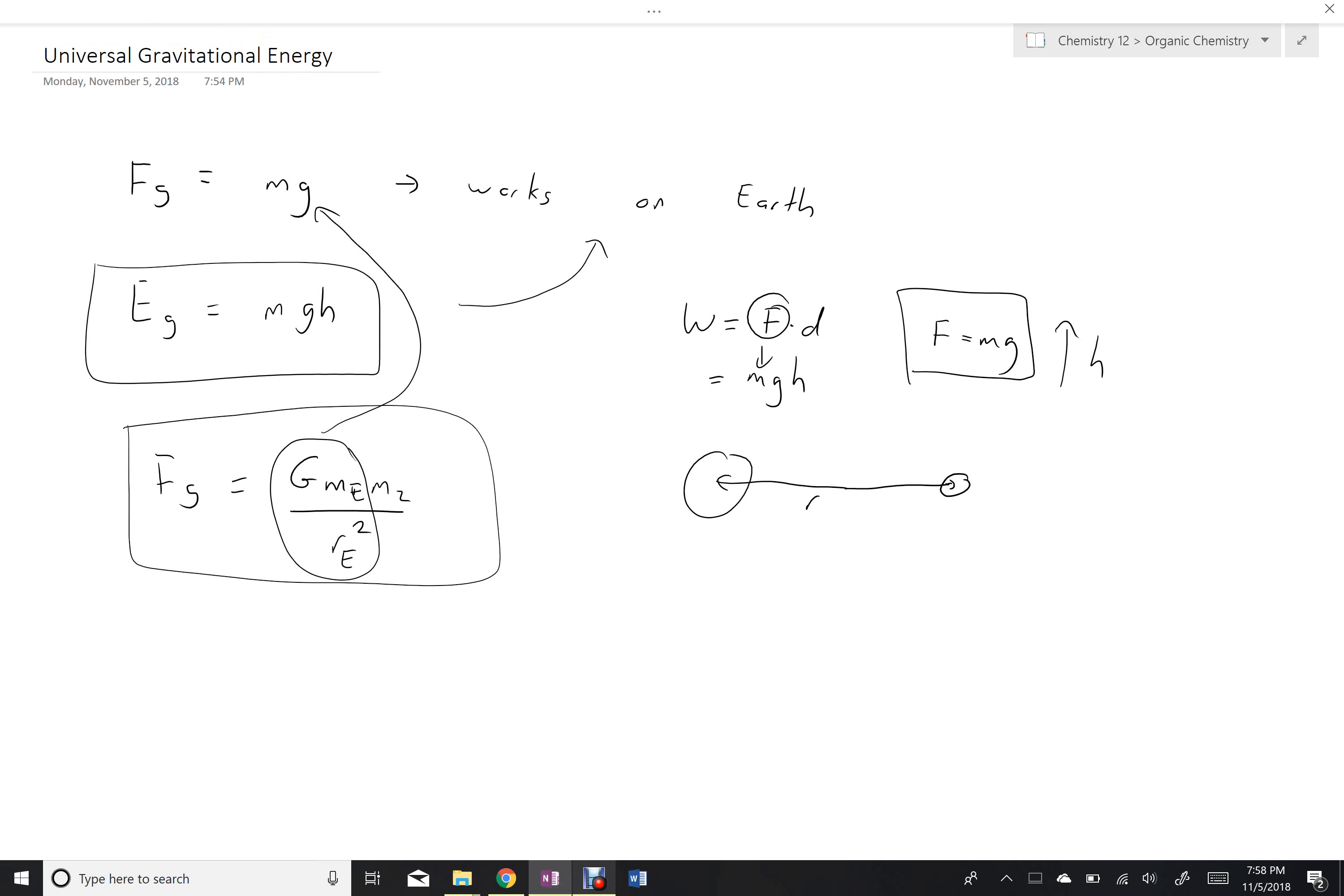So that formula, I won't derive it, I'm just going to give it to you. The new formula for universal gravitation, then, is G, M1, M2. Instead of being over R squared, it's just over R.